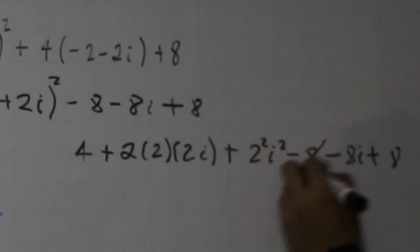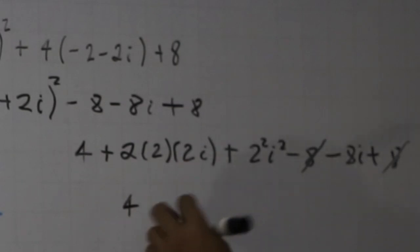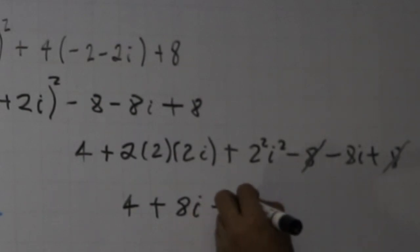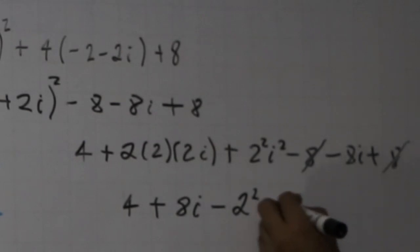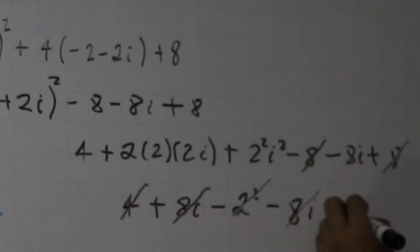-8 - 8i + 8. We can cancel this 8 and this other 8. And we got here 4, 2 times 2, 2 times 2, we have 8i. And remember, i² = -1, so that's like -2², that's -4. -8i. So you can cancel this with this, and you can cancel this with this, and we got in the end, 0.